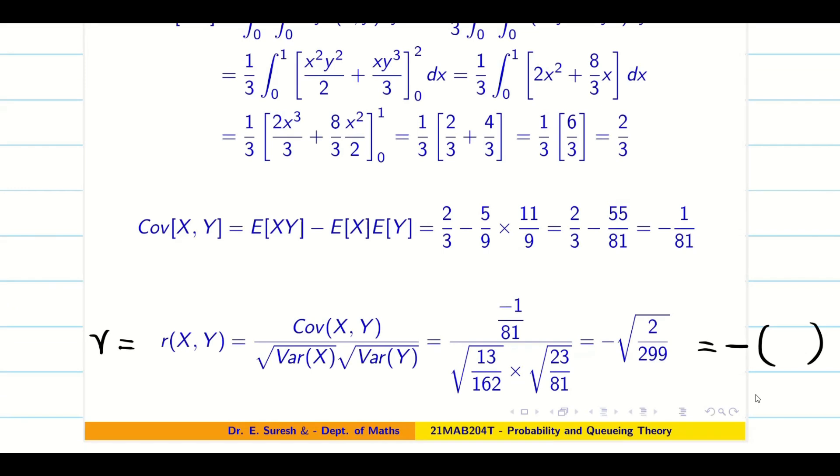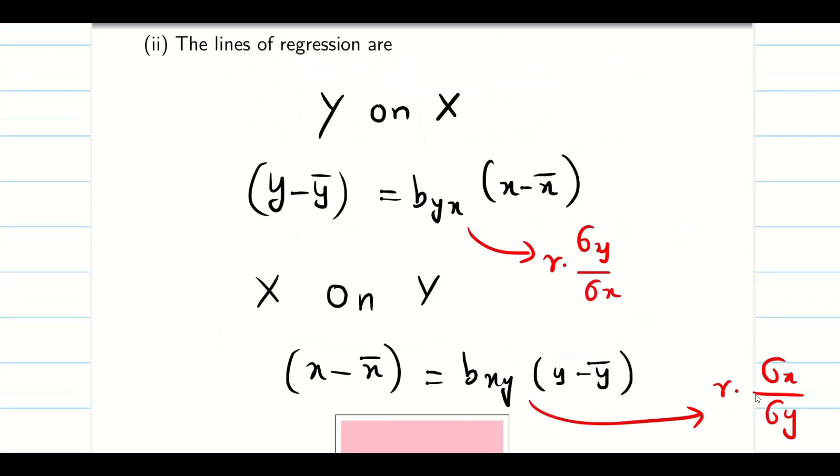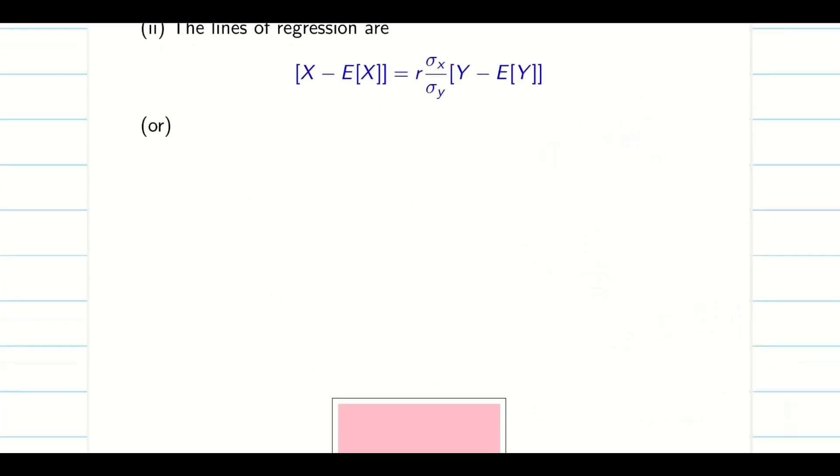Similarly, bxy is sigma x by sigma y times r. We know the r value, and we know sigma x, sigma y values also. Just substitute. And this x bar is E(X) and y bar is E(Y). Everything is in our hand, we just have to substitute and find the regression values.